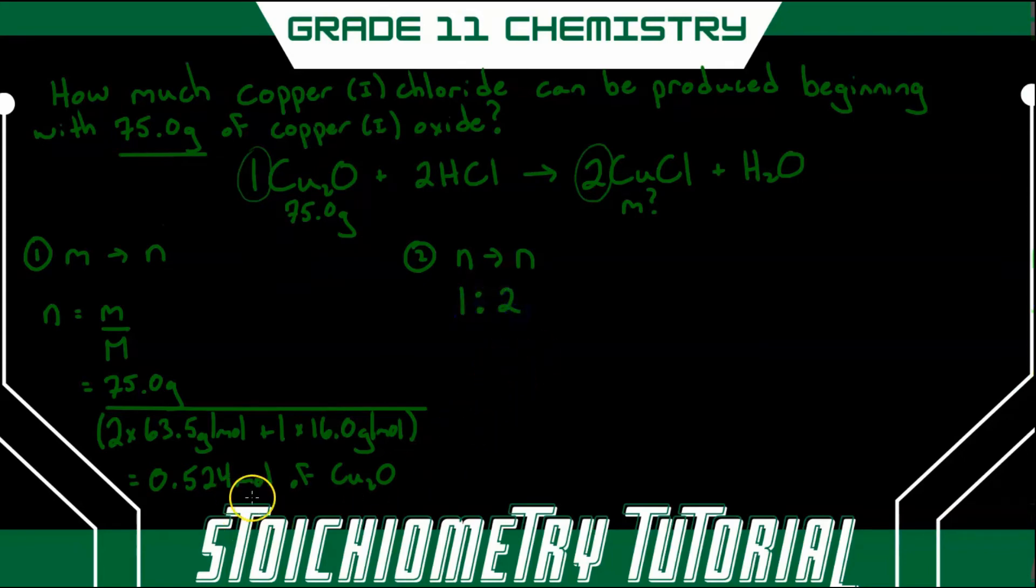The ratio is also the number of moles of copper oxide, which we calculated to be 0.524, to the number of moles of copper chloride, which we don't know. Let's call that x. So now to compare these two ratios, because I know they're the same, I'll write them as a fraction. So that's going to equal 0.524 all over x.